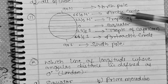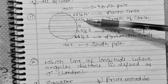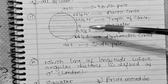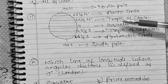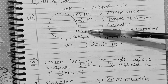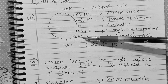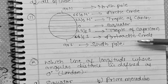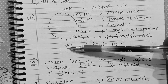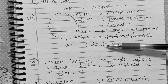66.5 degrees north is called the Arctic Circle. 23.5 degrees north is called the Tropic of Cancer. 0 degrees is called the Equator. 23.5 degrees south is called the Tropic of Capricorn. 66.5 degrees south is called the Antarctic Circle. 90 degrees south is called the South Pole. This is very important and can be asked directly.